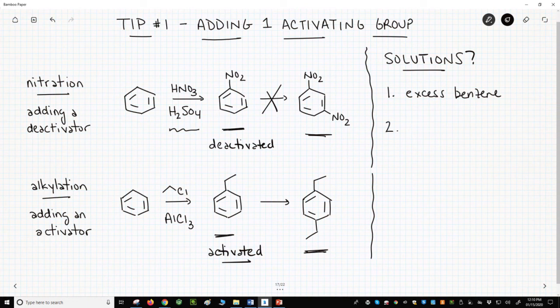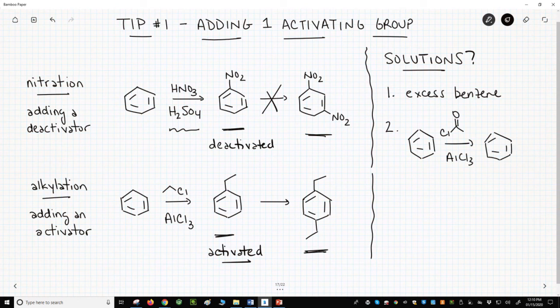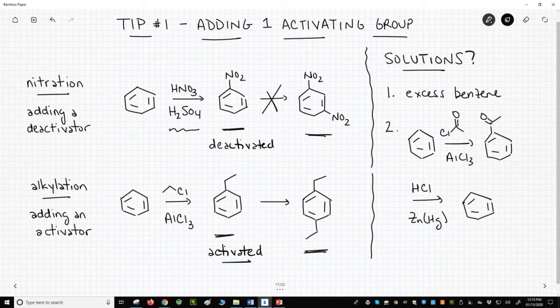The second solution is to add a two-carbon group by an acylation instead of an alkylation. So we'll simply add an electron withdrawing group. Once we're done with that reaction, we can do a Clemensen or the Wolf-Kishner reduction to convert the acyl group to the alkyl group. So that's our first tip.